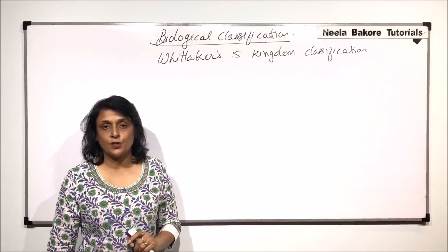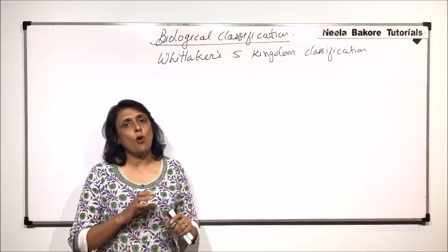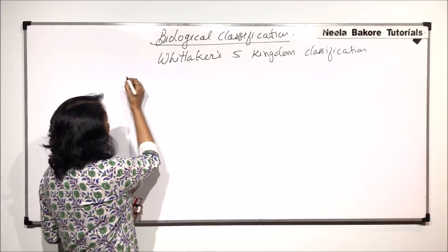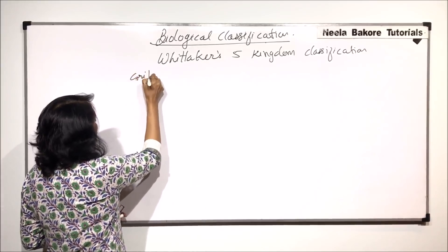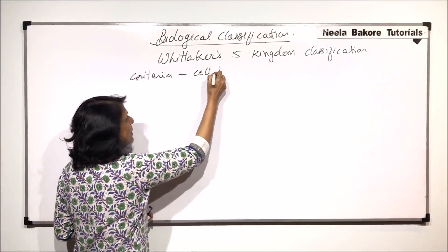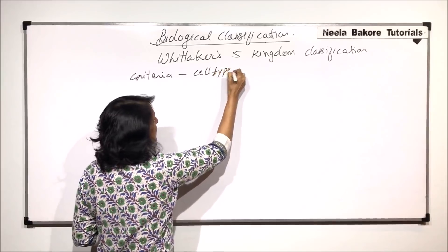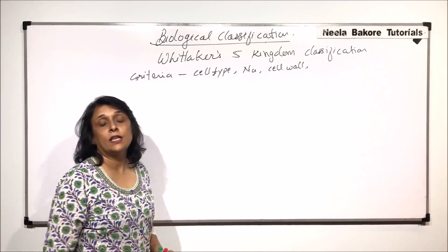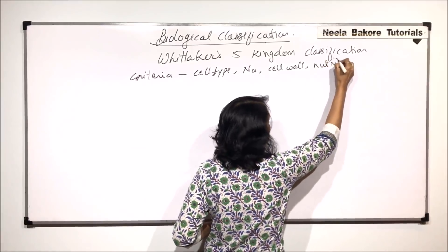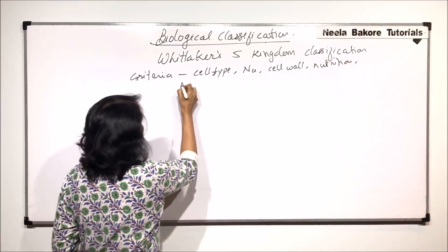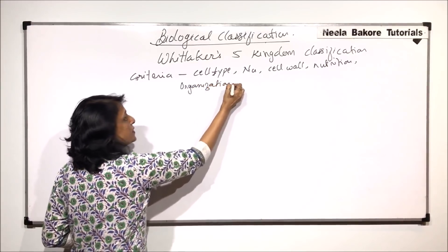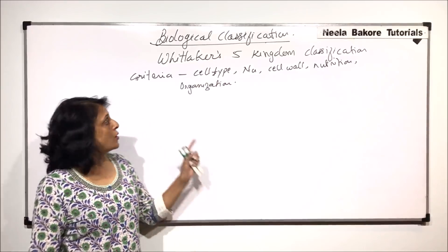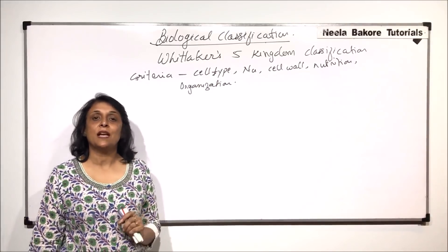This is a Natural Classification. Natural Classification means when almost all the parameters are taken into account. So when Whittaker wanted to classify these living organisms, he used criteria like cell type, presence or absence of nucleus, cell wall, the type of nutrition which they show, and organization — whether it is at a cell level, tissue level, or organ and system level of organization. Keeping all these things in mind, this Five Kingdom Classification was given.